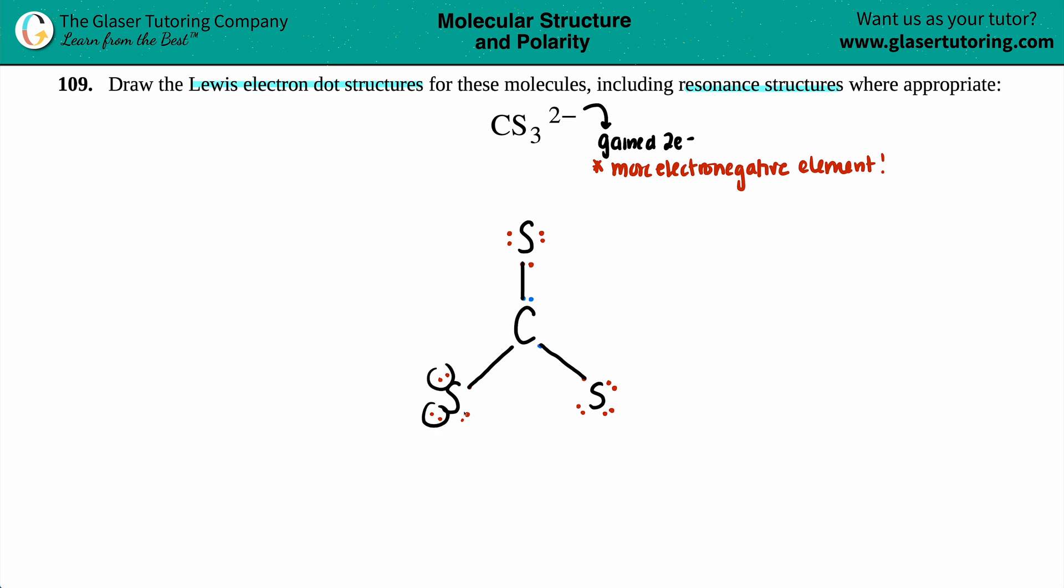For example, this sulfur has two, four, six, eight electrons. I'm not going to touch anything about this. Same thing with this one, two, four, six, and eight. But if I look at this sulfur, it has two, four, six, and seven. It's looking at this electron like, can we please share? And the carbon says, most certainly we can share. So another bond. And now the sulfur is happy with eight electrons, and the carbon is also happy with eight. Everybody's got the octet.